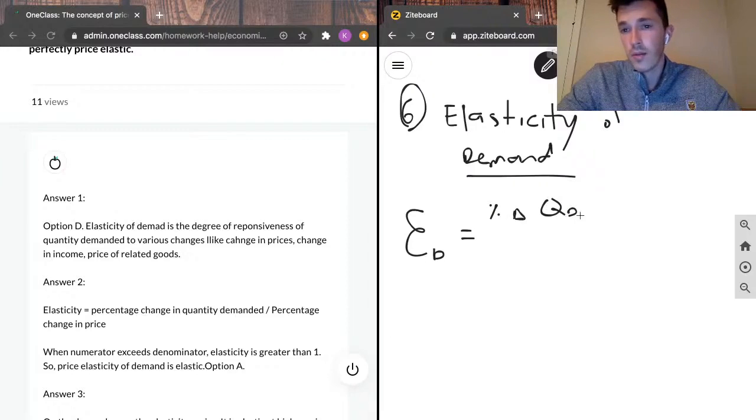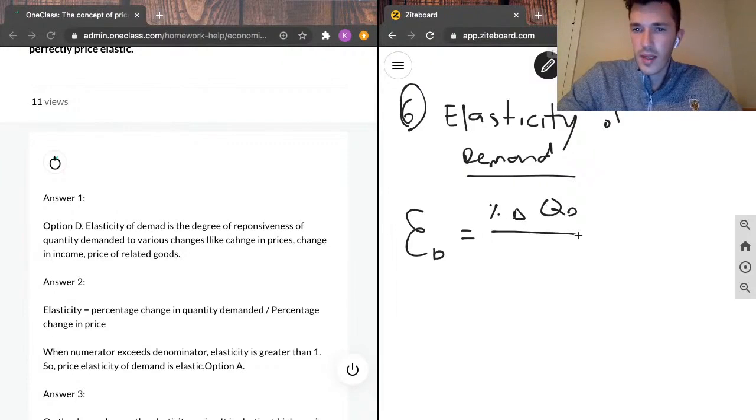The triangle here, a small triangle, which is called delta, denotes change. So we've got percent change in quantity demanded over the percent change in price.